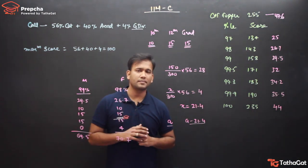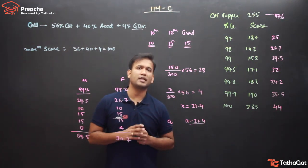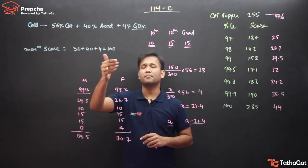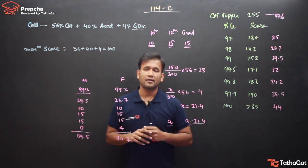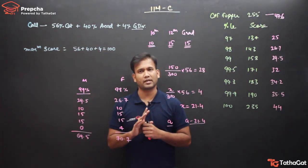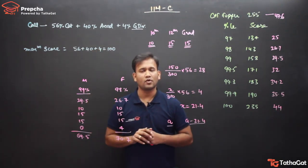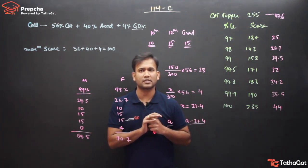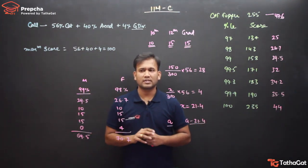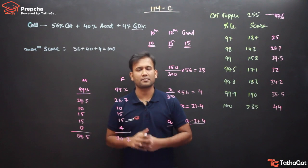Note that work experience is not used for the IIM Calcutta call criteria — it only factors into final conversion. The call criteria covers CAT score, academics, and gender diversity as discussed. Work experience and academic diversity are evaluated at a later stage, which is stage 3. This is the stage 2 call analysis. This is it everyone — now you can understand your chances against any other candidate. Thank you everyone.